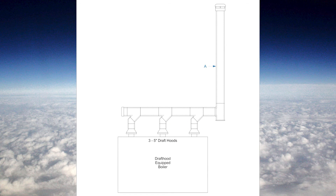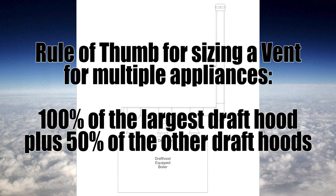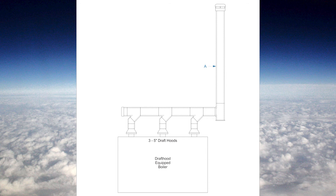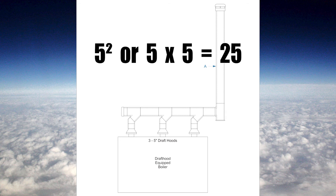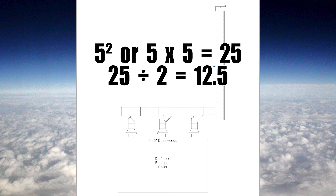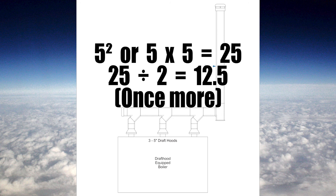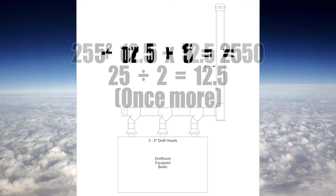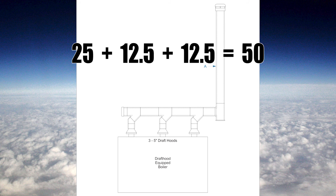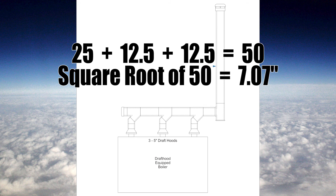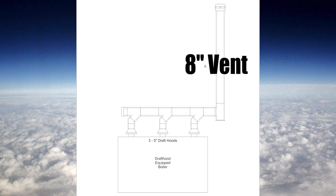For the last example, I have a large boiler with three five inch draft hoods. The process is the same: 100% of the largest plus 50% of the smaller ones. Since they're all the same, I take 100% of any one — five squared equals 25 — plus 50% of the other two: five squared equals 25 divided by two equals 12.5, and again 25 divided by two equals 12.5. Adding all three: 25 plus 12.5 plus 12.5 equals 50 square inches. The square root of 50 is 7.07 inches, so the vent needs to be eight inches.